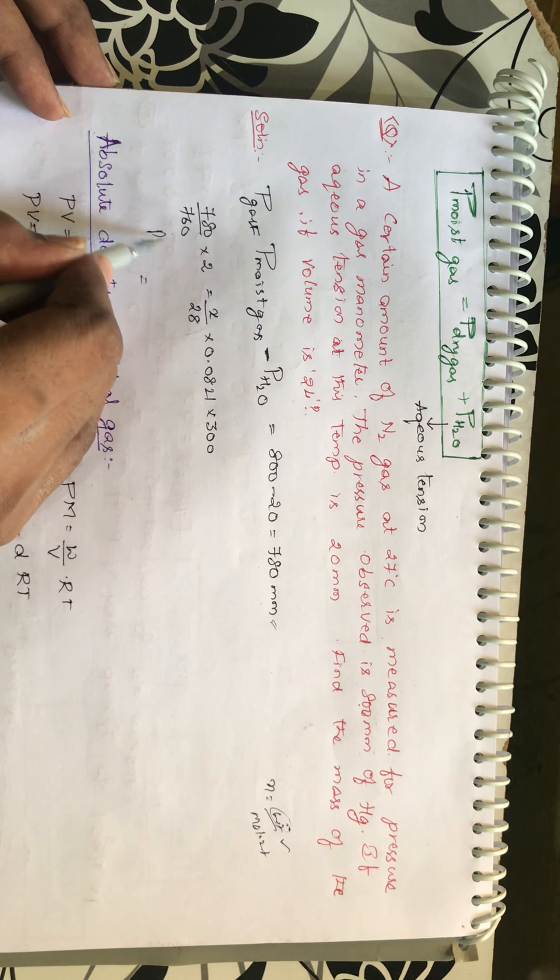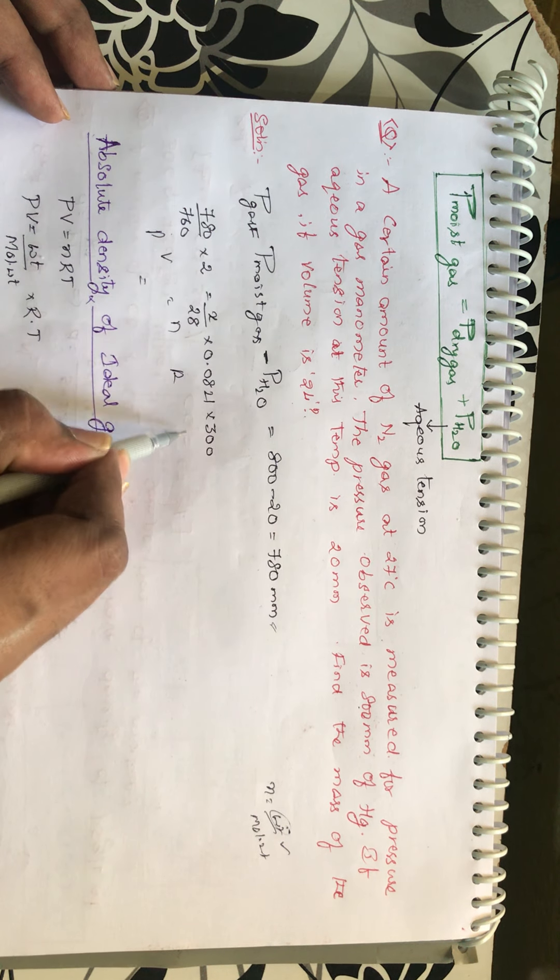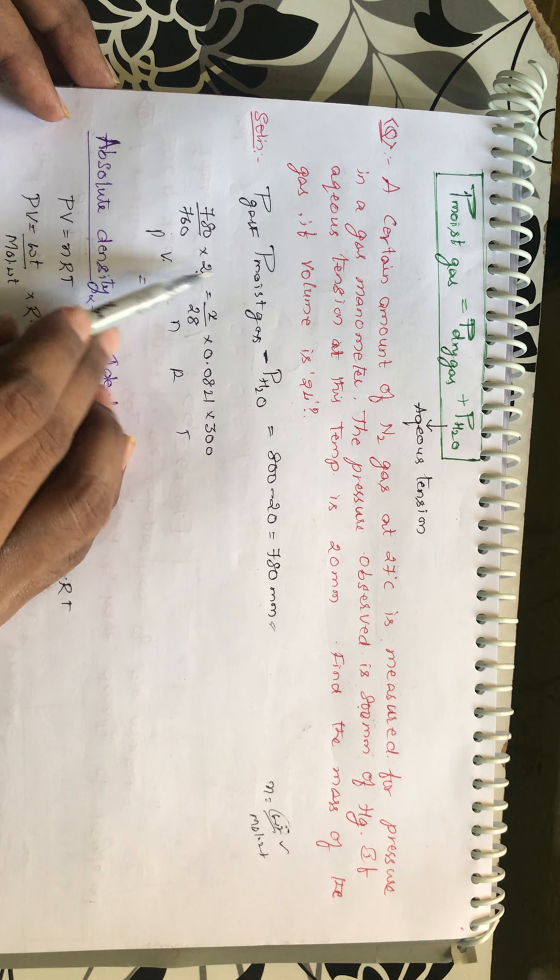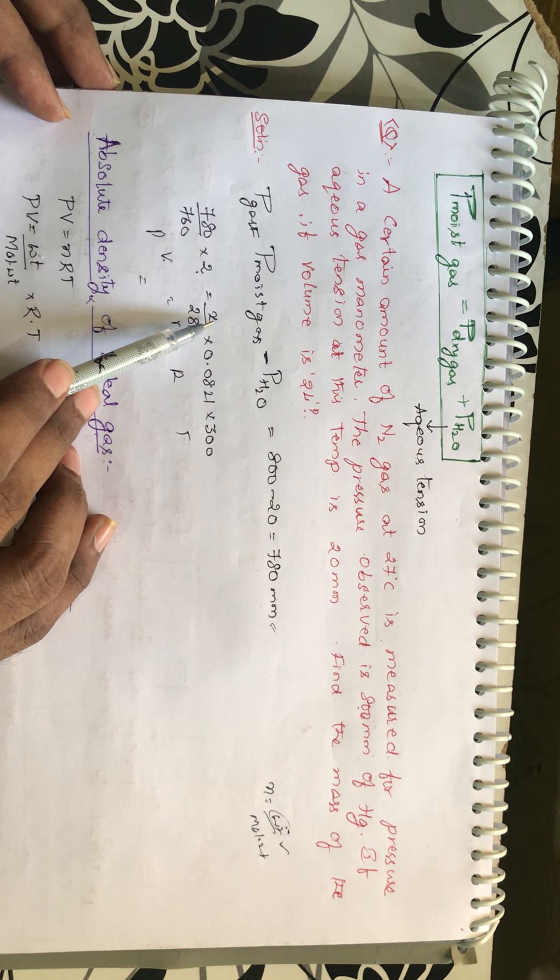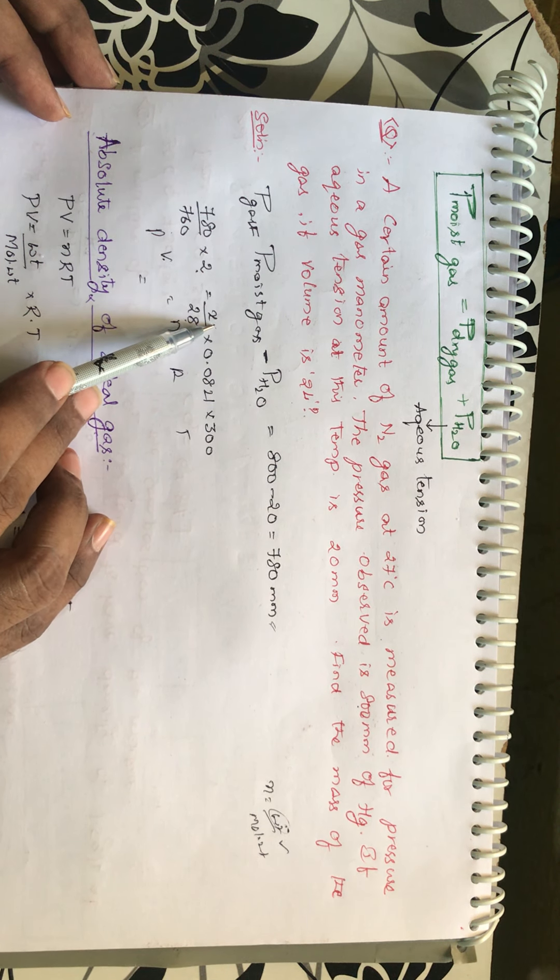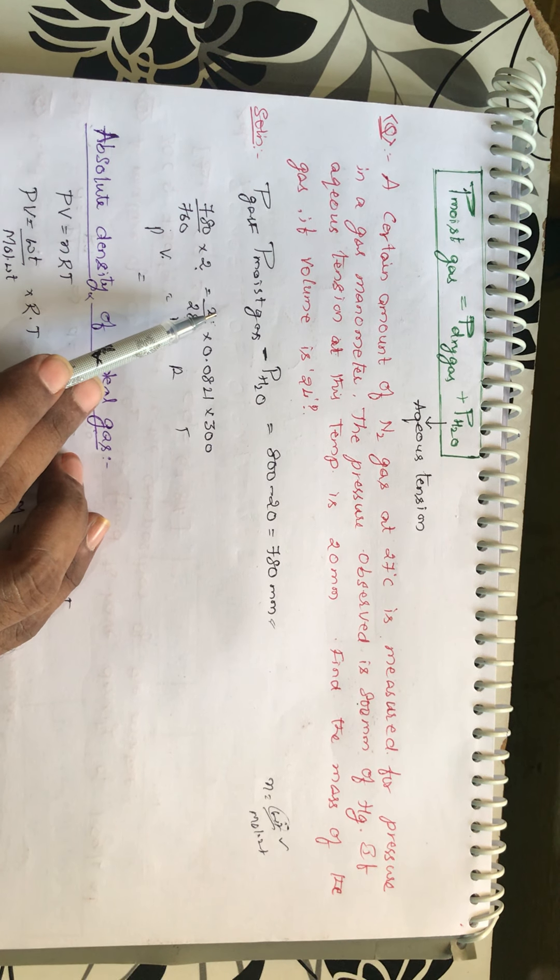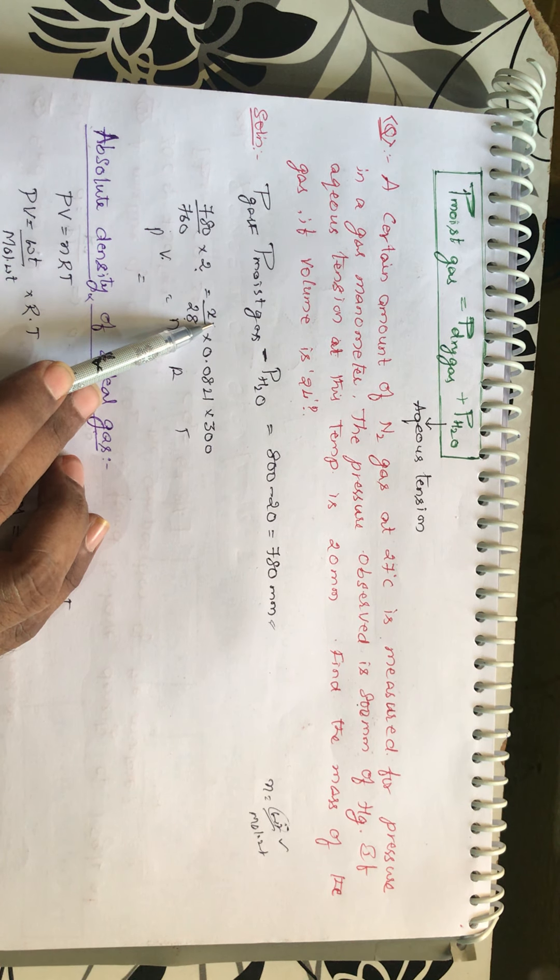Next, this is PV is equal to NRT equation. PV equals NRT. And volume is 2 liters. And you require X by 28. X is nothing but weight by molecular weight. Weight you are taking it as X.